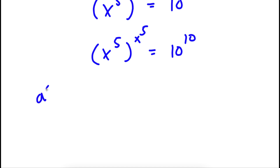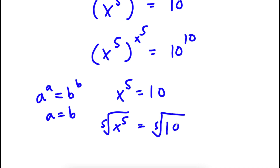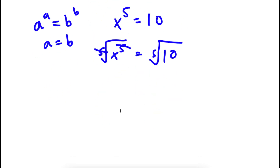Now, if I have something in the form a to the power of a equals b to the power of b, then a equals b. So in this case, x to the power of 5 is equal to 10. To solve this, I'm going to take the fifth root on both sides, so these cancel out and I'm left with x is equal to the fifth root of 10.